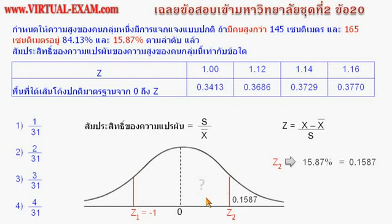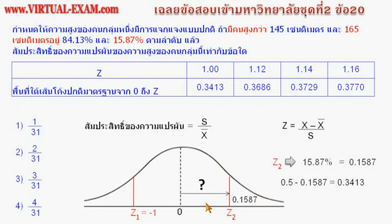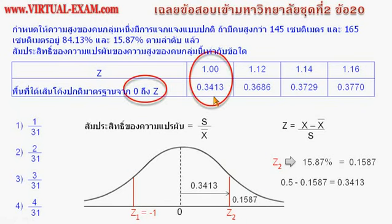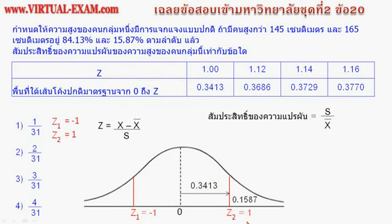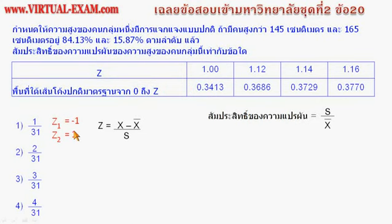ต้องการหาพื้นที่จาก 0 ถึง Z2 โดยนำ 0.5 ลบด้วย 0.1587 จะได้ 0.3413 พื้นที่ตรงนี้คือ 0.3413 ซึ่งเท่ากับพื้นที่จาก 0 ถึง Z1 ดังนั้น Z2 จึงมีค่าเท่ากับ 1 ดังนั้น Z1 เท่ากับ -1 และ Z2 เท่ากับ 1